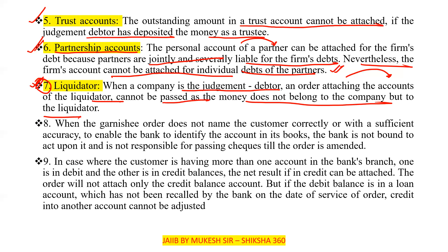When the garnish order does not name the customer correctly or with sufficient accuracy to enable the bank to identify the account in its books, the bank is not bound to act upon it and is not responsible for passing checks till the order is amended.